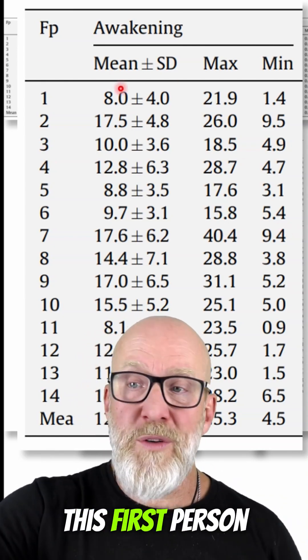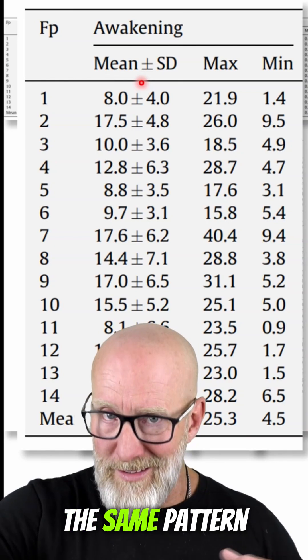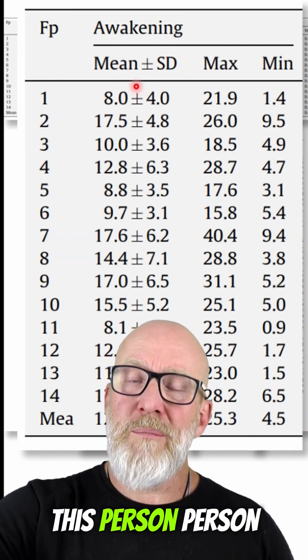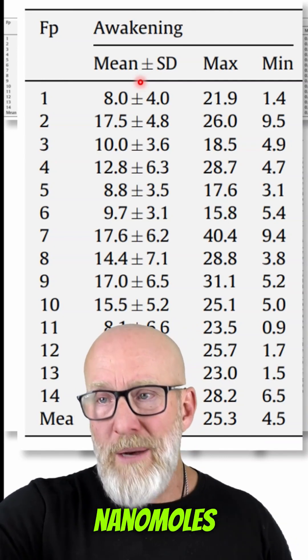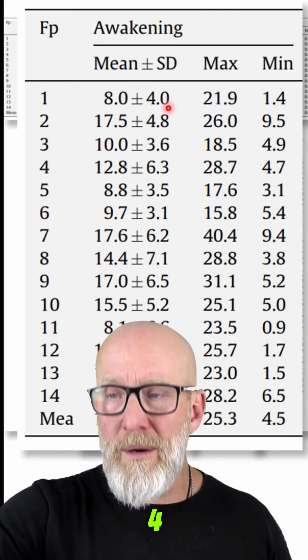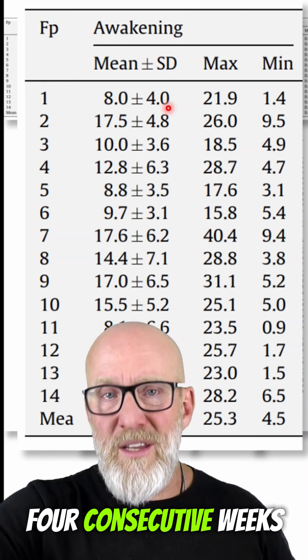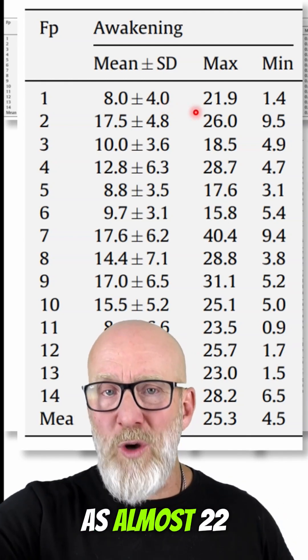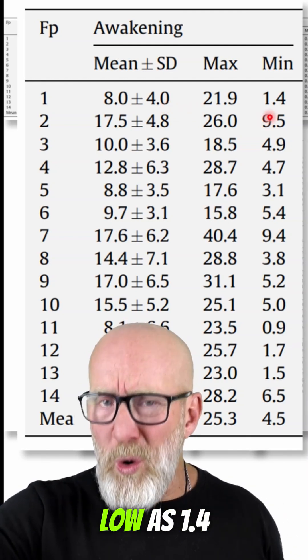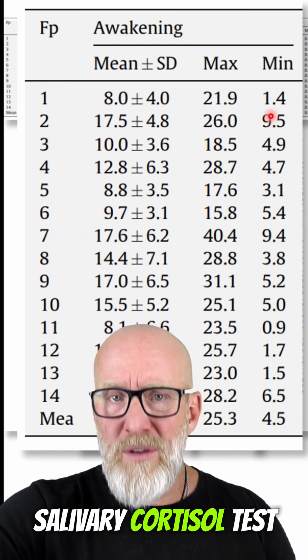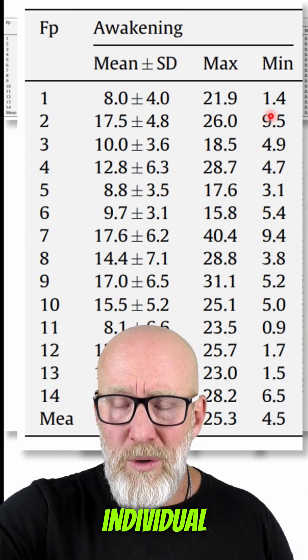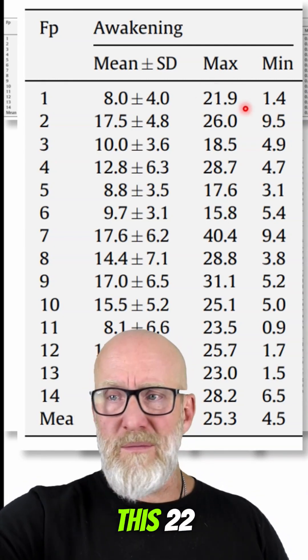So we're just going to talk about this first person here. We had an average cortisol when they woke up of around eight nanomoles with a standard deviation of about four, but in the course of that four consecutive weeks had as high as almost 22 nanomoles and as low as 1.4. Now depending on when you did this salivary cortisol test on this particular individual, and it was as high as this 22, you might say,